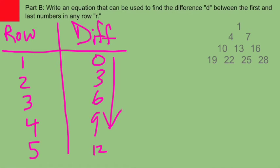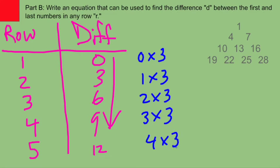90% of the time, when they ask you to write an equation, there's going to be some sort of times table in the mix when you're in algebra 1. So this time we got our 3 times table, right? This is 0 times 3, 1 times 3, 2 times 3, 3 times 3, 4 times 3.